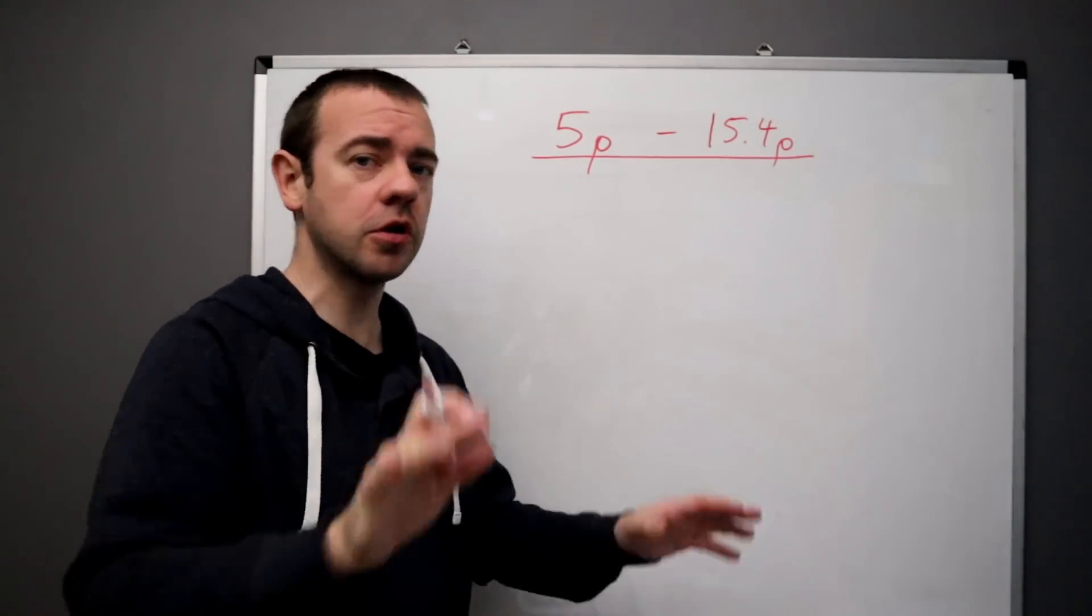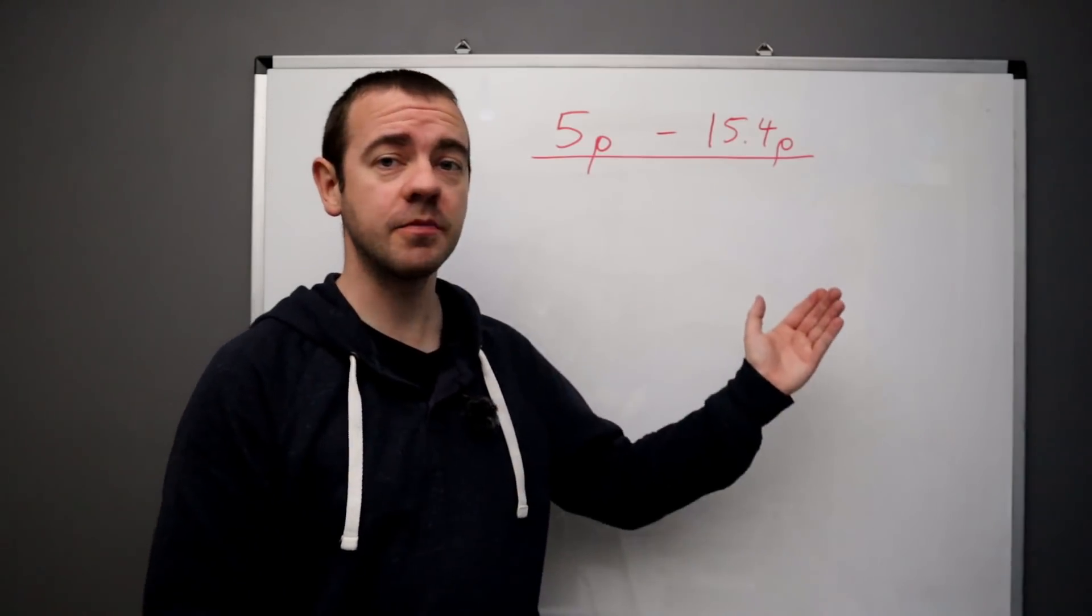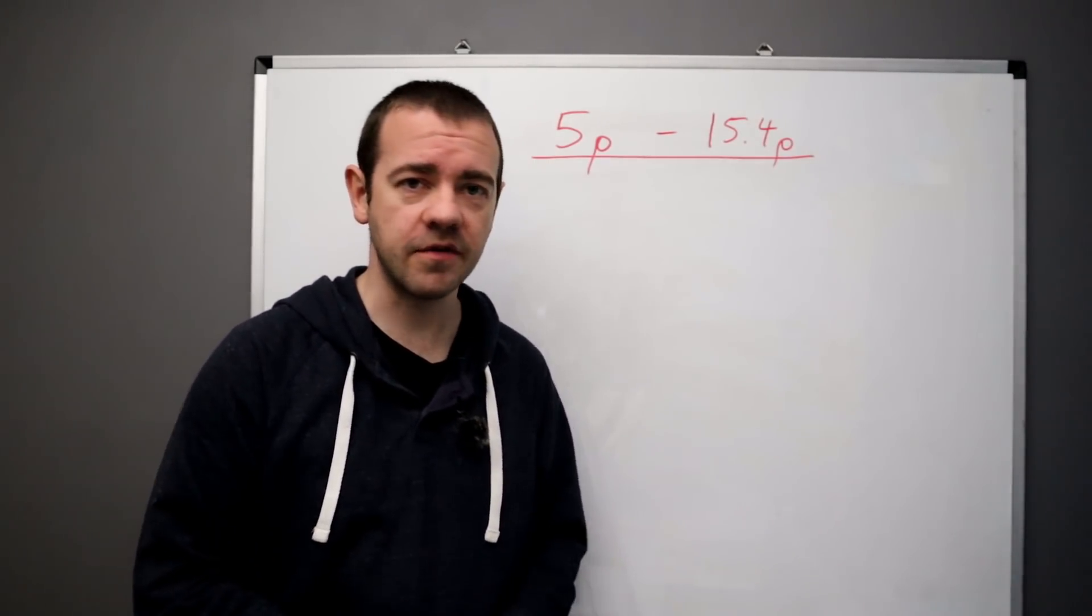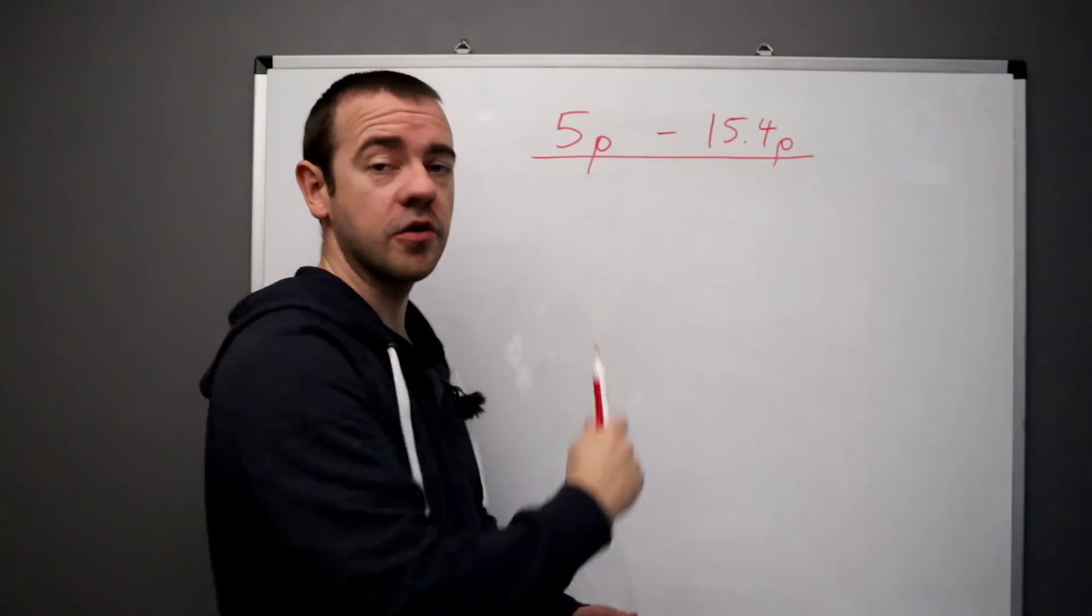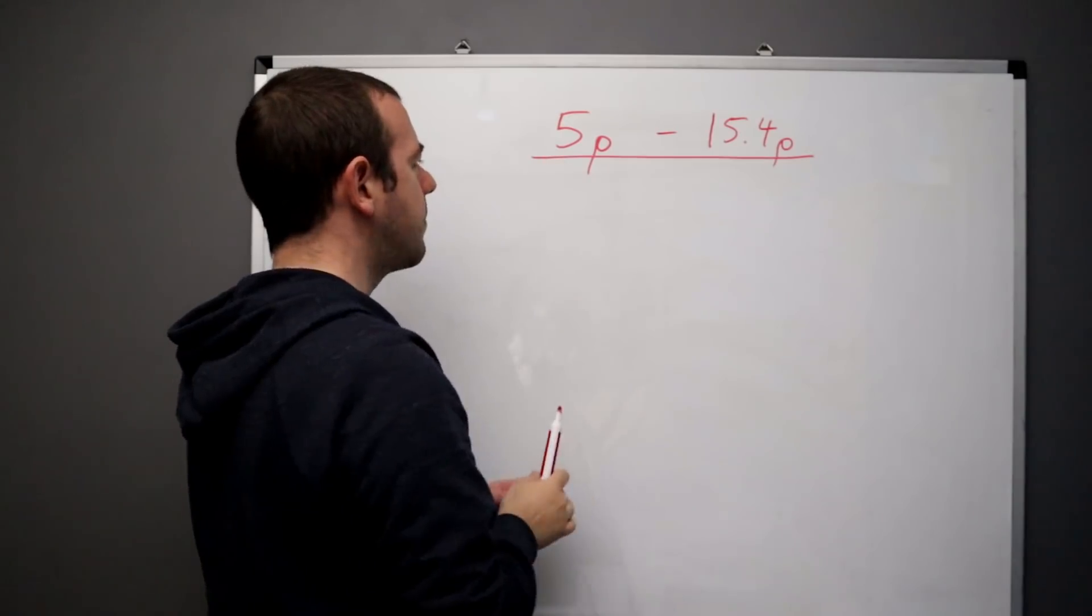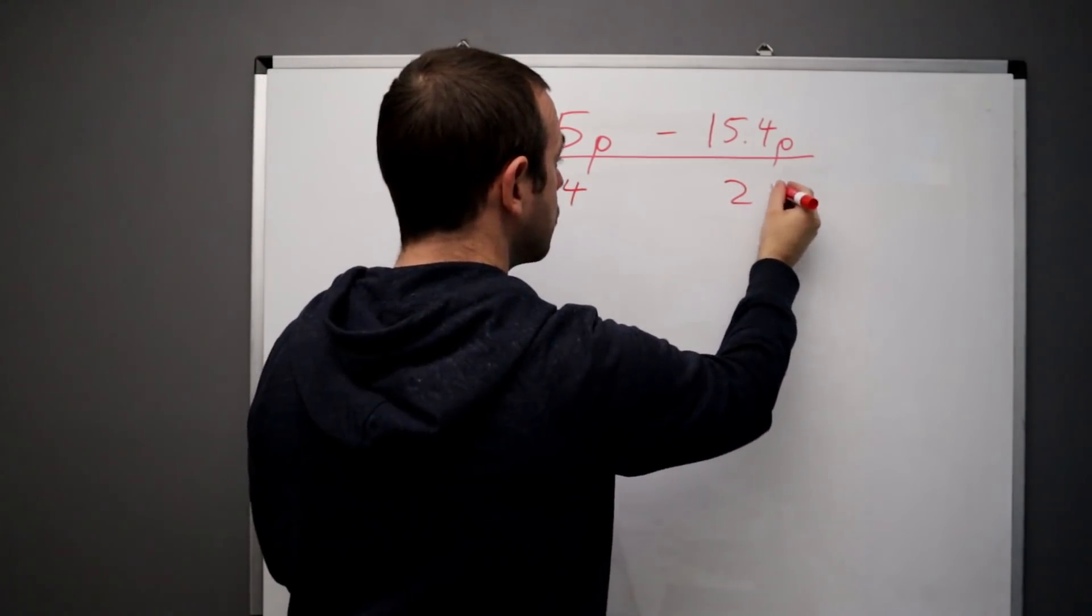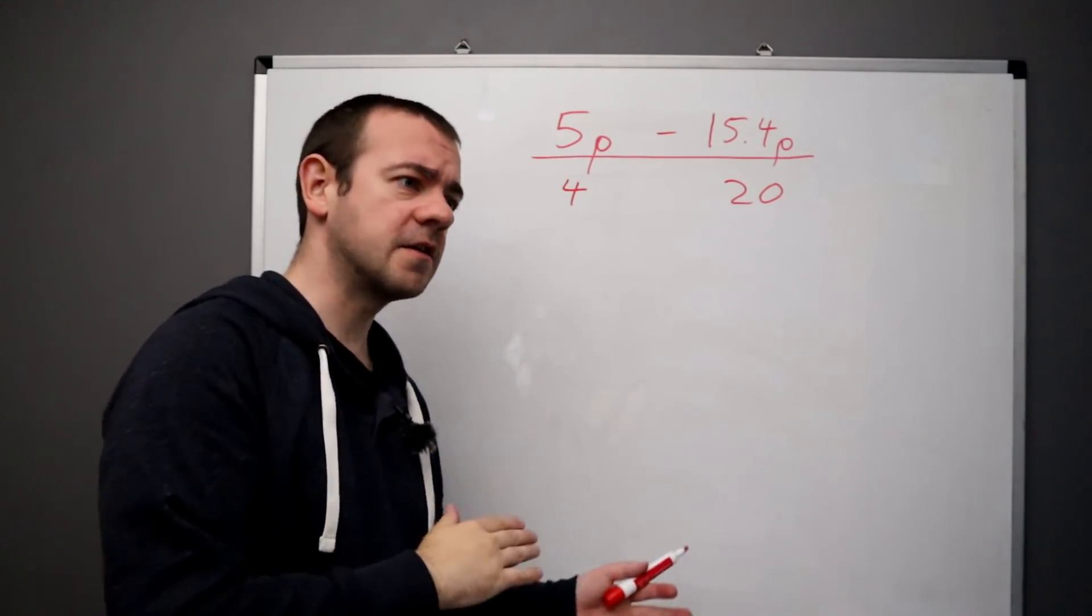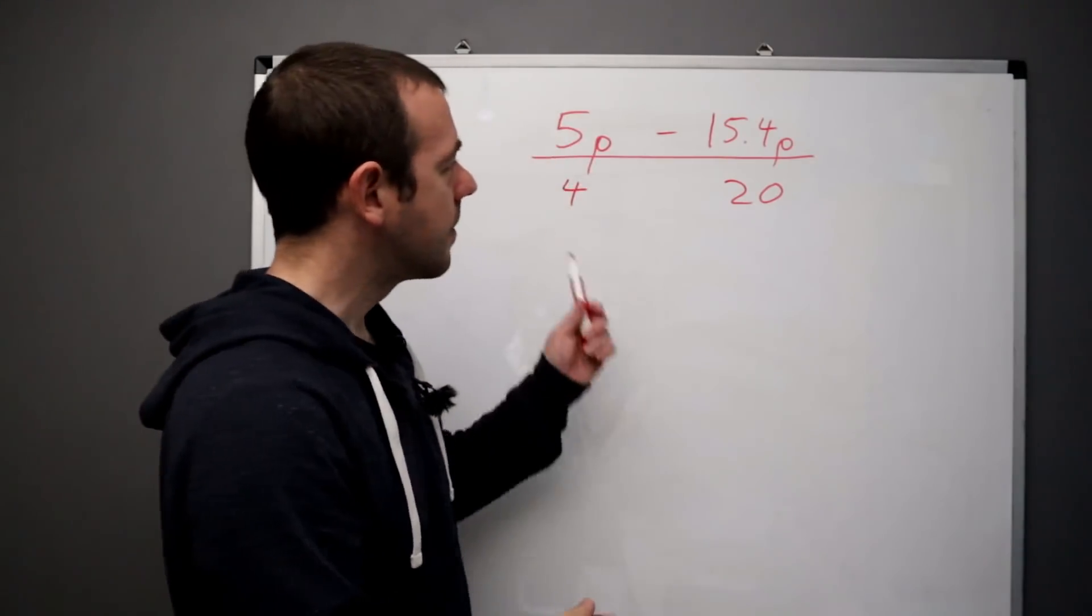Now to explain this whole concept of why your battery makes sense now financially, I'm going to have to explain the type of tariff that makes it make sense. I'm on one called Octopus Go, there are other tariffs with other energy companies that effectively is cheap at night but more expensive during the day. Now this is what I'm on at the moment, I pay 5 pence per kilowatt hour for 4 hours at night and of course for the other 20 hours I pay 15.4 pence. But that's only because I fixed mine back in May, so for the next year, until next May, that's what I'm on.